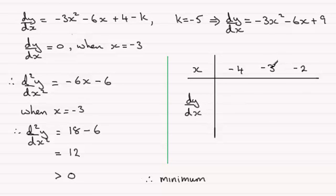We know the gradient when x is minus 3, if we substitute it into this equation, we get 0. So as far as the slope goes, the tangent there is going to be horizontal.